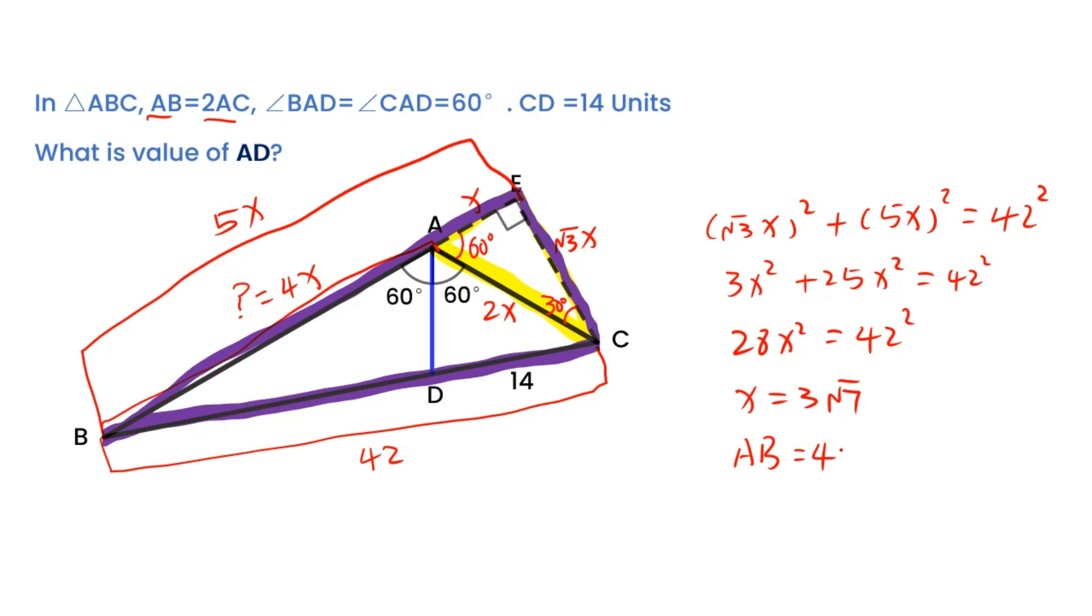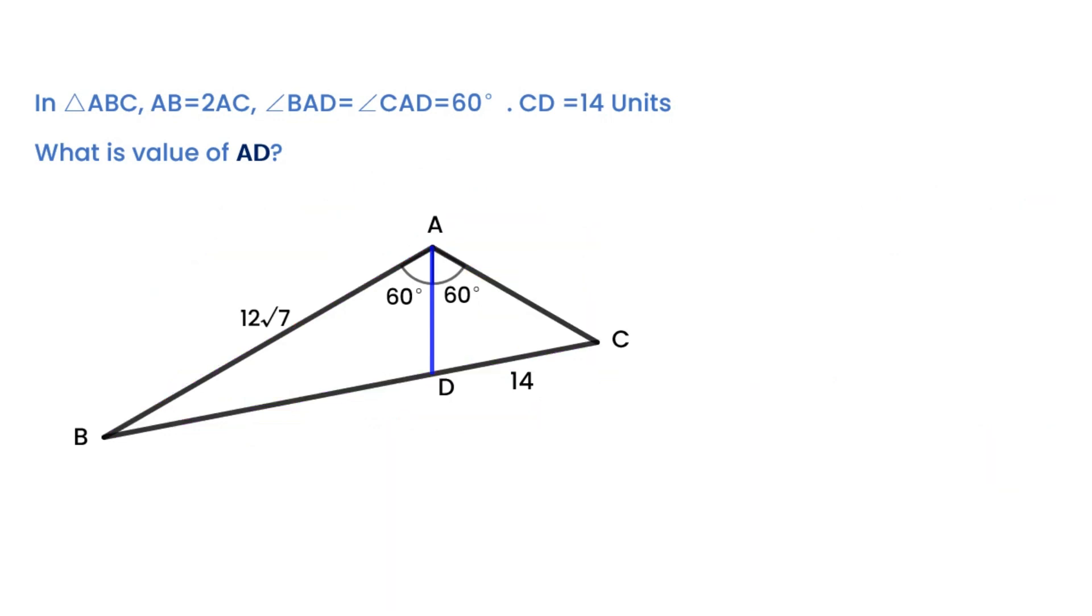AB equals to 4 times X. AB is 12 times square root of 7. Then let's double check AB equal 2 times AC.